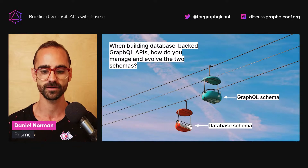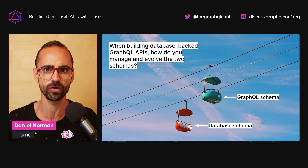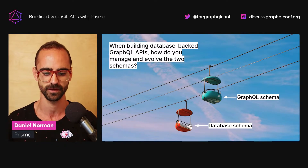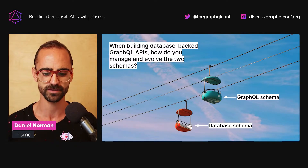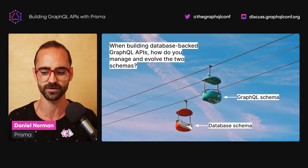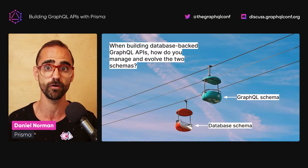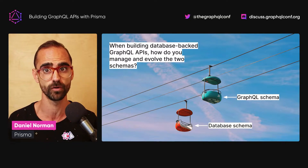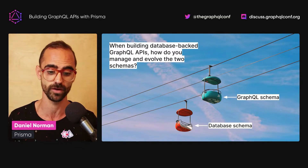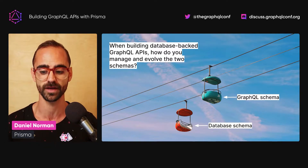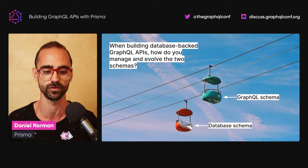This begs the question: how do you manage and make sure that you have full control over your GraphQL API when it's backed by a database? This can be a challenge because you end up with these two schemas, and adding new features typically involves changes to both the database and the GraphQL schema. Today you will learn about the ways that Prisma helps you build these GraphQL APIs and manage the two schemas.